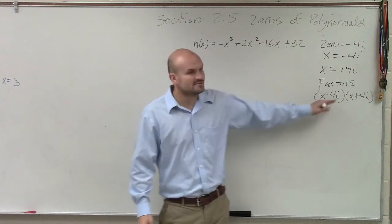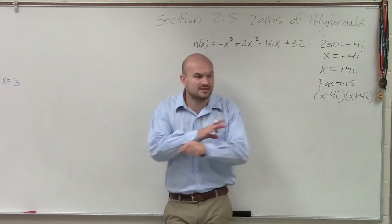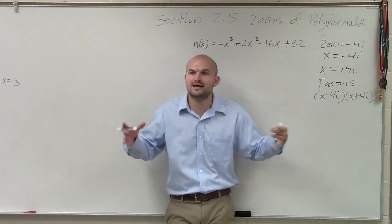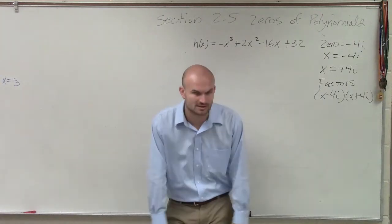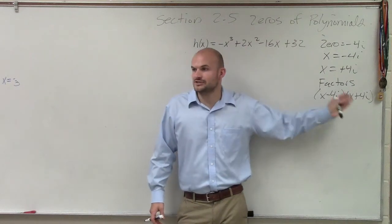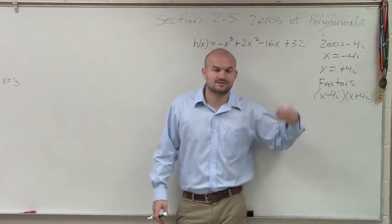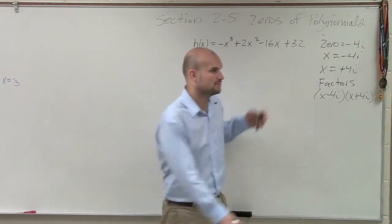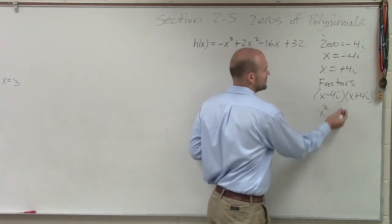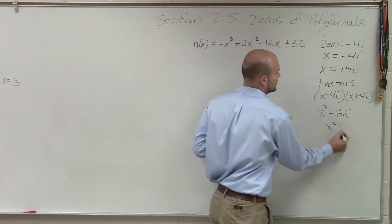So these are my two factors though. I can multiply my factors - these are all my linear factors. I can multiply this to produce another factor, but just as a quadratic. And I notice that these are conjugates of each other, so therefore conjugates are going to be the difference of two squares. Just multiply the first two terms: x squared. Multiply the last two terms: -16i squared, which gives x² + 16.